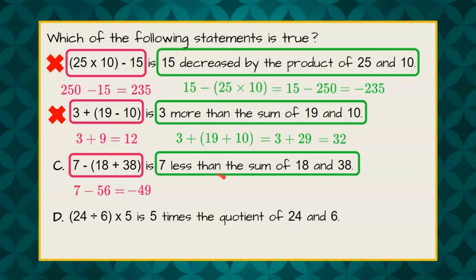7 less than, so we're going to say 7 less than. That means I'm taking 7 away from this sum, the sum 18 and 38. 18 plus 38 is 56, and we're going to take away 7 for the less than, and it's 49. 49 and negative 49 are not the same.